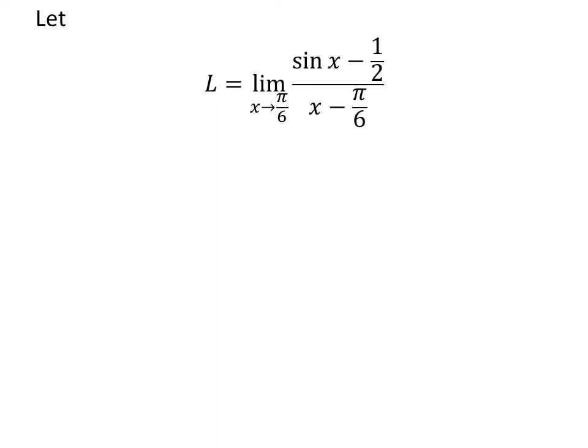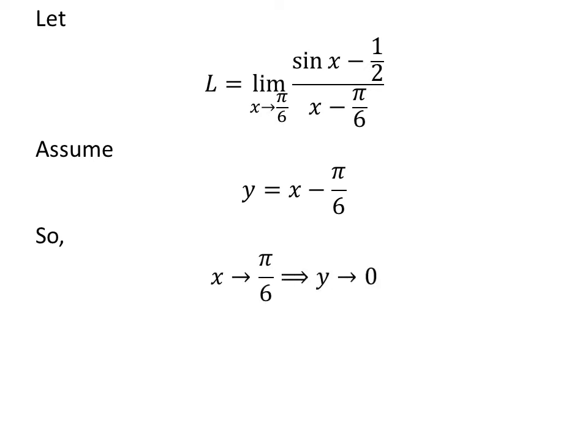Let us assume L is the limit of sine of x minus half upon x minus pi upon 6, as x approaches pi upon 6. Let us assume y is equal to x minus pi upon 6. So, as x approaches pi upon 6, y approaches 0.